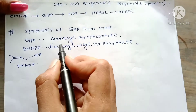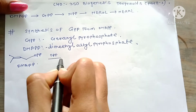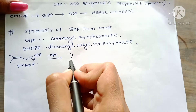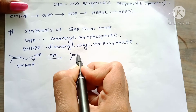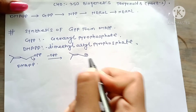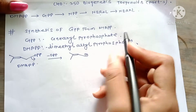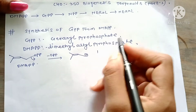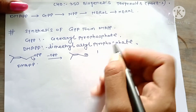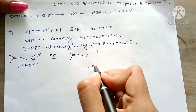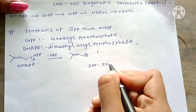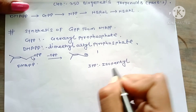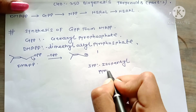The first step is the loss of OPP and formation of an allylic carbocation: CH3-CH3 double bond CH2+. This allylic carbocation then reacts with an IPP molecule. IPP means isopentyl pyrophosphate.